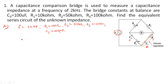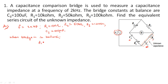When calculating unknown values — whether resistance, impedance, or frequency — they are determined when the bridge is in a balanced condition. When the bridge is balanced, we know that Z1·Z4 = Z2·Z3.